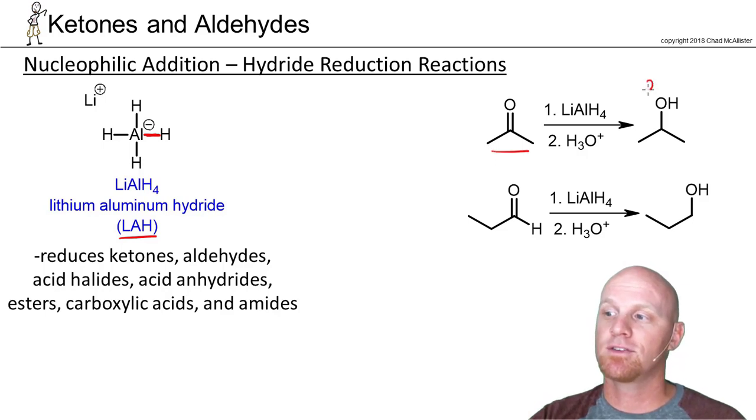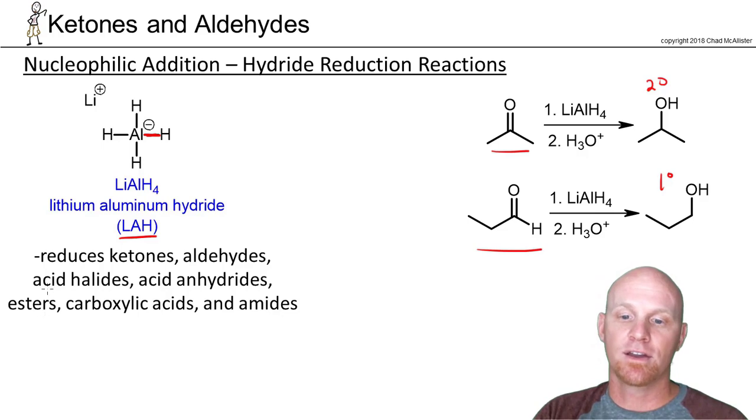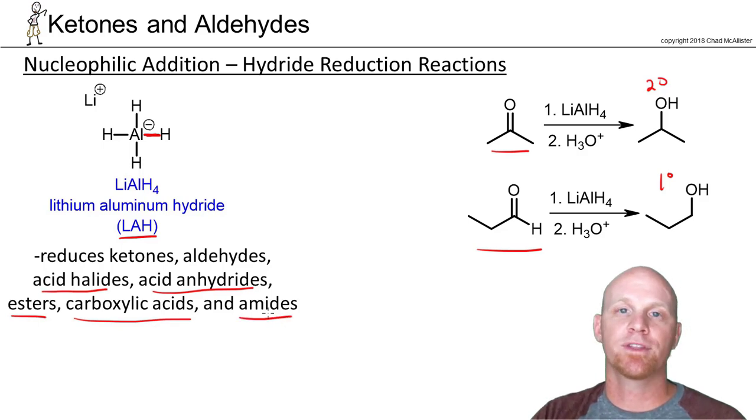It turns ketones into secondary alcohols and aldehydes into primary alcohols. In addition, it also reduces acid halides and acid anhydrides, but it will also reduce esters, carboxylic acids, and amides, as we'll learn in the future. For this chapter, though, they look functionally equivalent. We'll find out in the future there are some things lithium aluminum hydride can do that sodium borohydride can't.